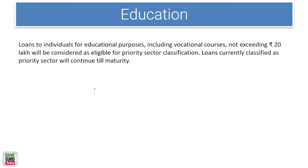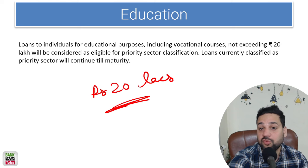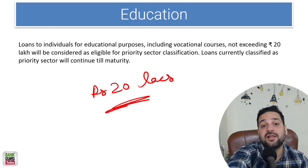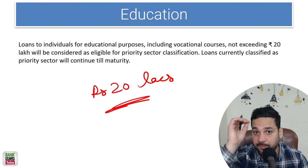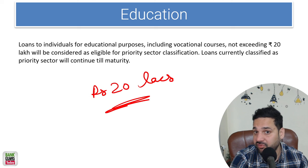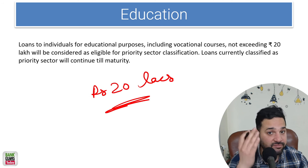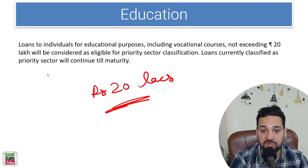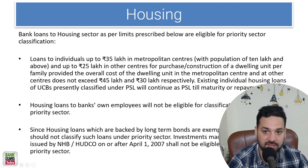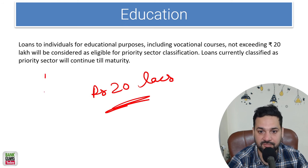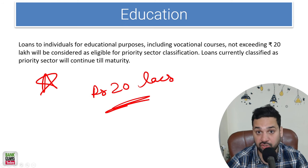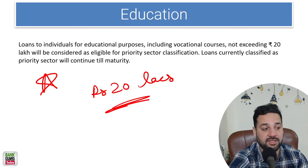Education loans up to 20 lakh rupees are considered towards priority sector lending. This is very important — I have seen this question multiple times in multiple exams. Please remember: education loans up to 20 lakh are priority sector lending loans.